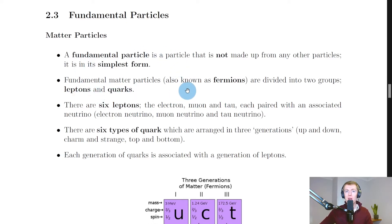It then says that fundamental matter particles are also known as fermions and are divided into two groups. So we have leptons and quarks, and we saw this in the previous theory video on the standard model.